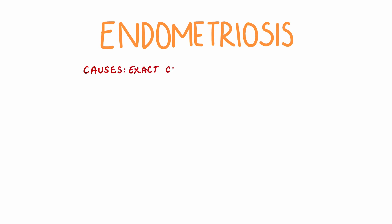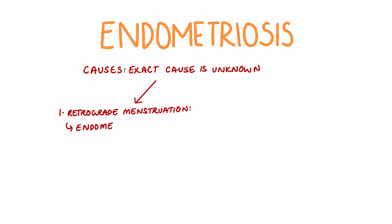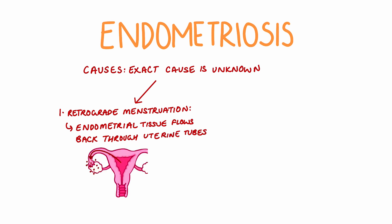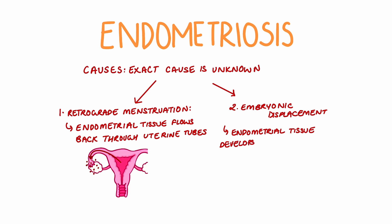The exact cause of this pathology is unknown; however, there are various theories. The first is retrograde menstruation, where endometrial tissue flows back through the uterine tubes and into the pelvis during menstruation. The second is embryonic displacement, which explains that endometrial tissue may have developed in areas outside the uterus during development. These are just a few theories, and what's important to know is that we don't exactly know the cause of endometriosis.